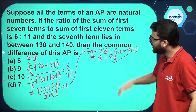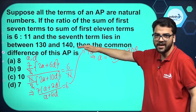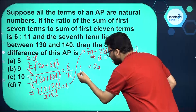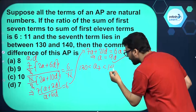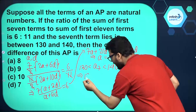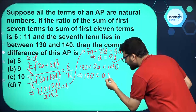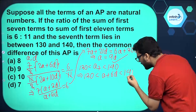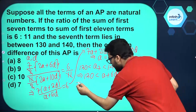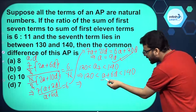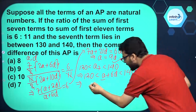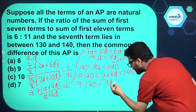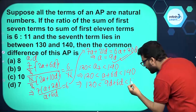It is given in the question that the 7th term lies between 130 and 140, so a₇ lies between 130 and 140. Now a₇ = a + (7−1)d = a + 6d. Substituting a = 9d, we get: 130 < 9d + 6d < 140.